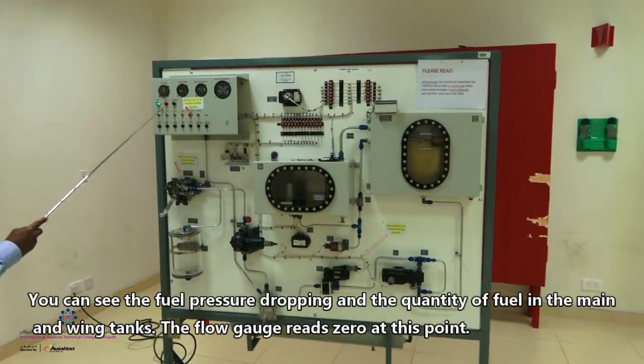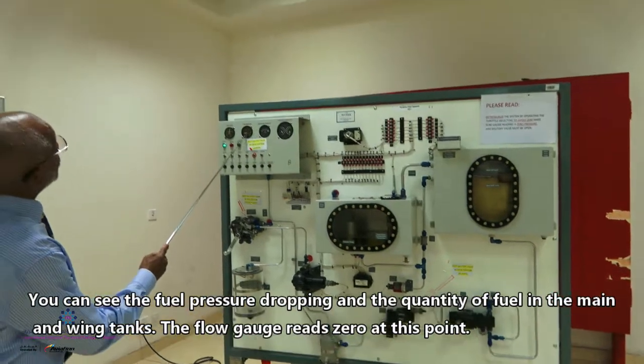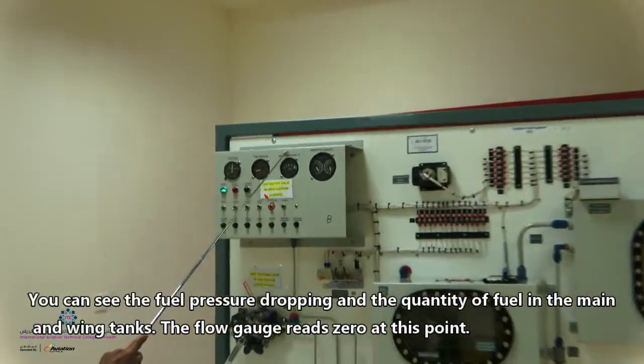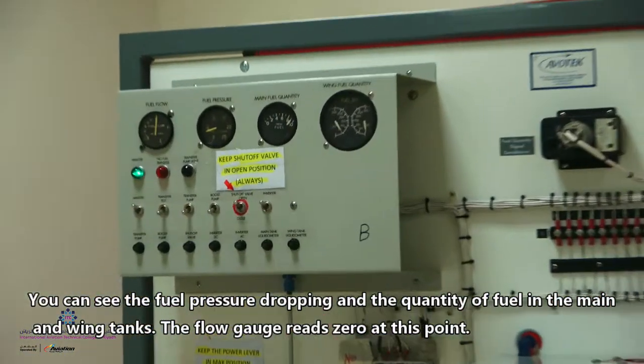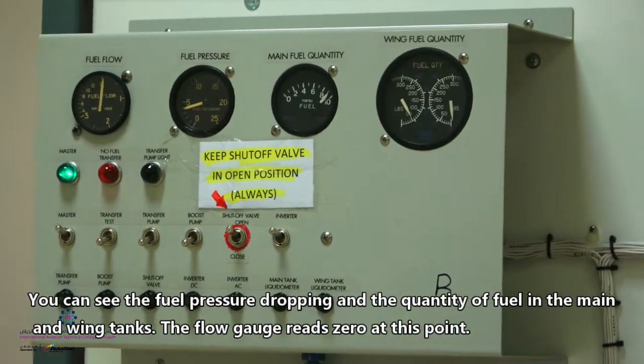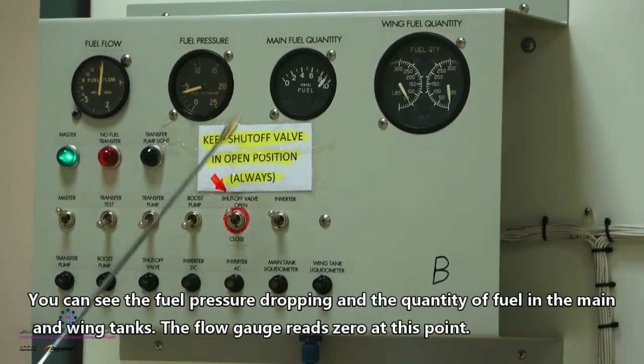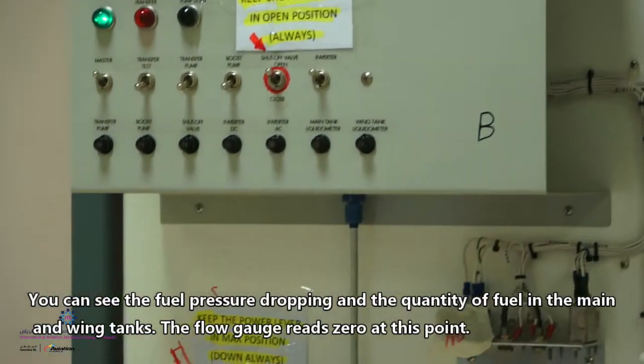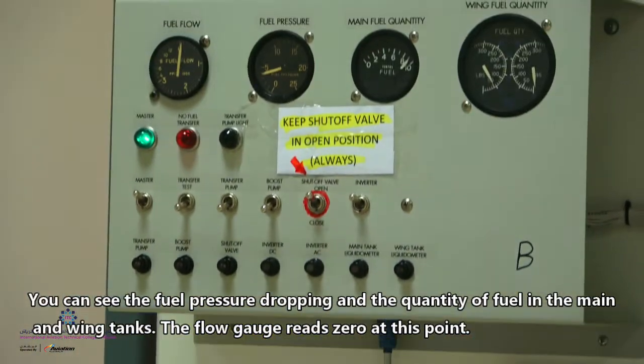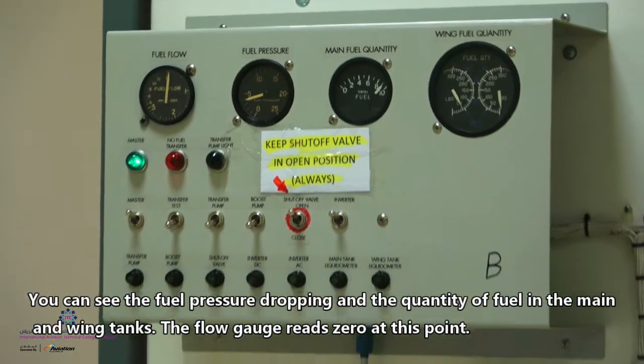And you can see now, the reading, the fuel pressure will start dropping. Okay, now, you see the quantity of the main fuel tank. And you can see, also, the wing tank. The fuel flow now went to zero because there is no more fuel flowing through the system.